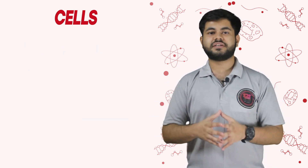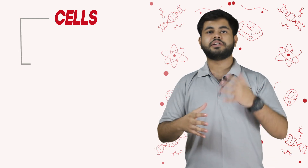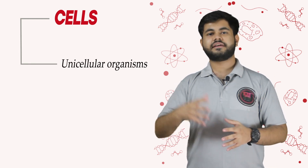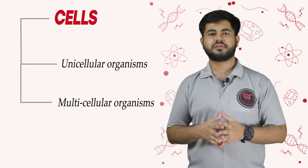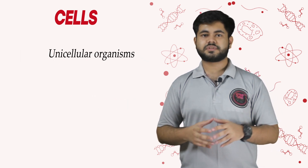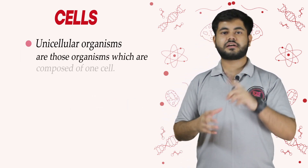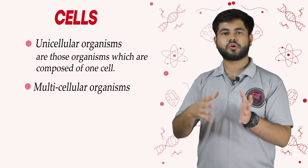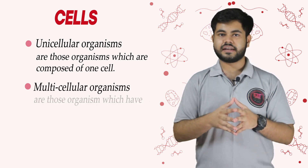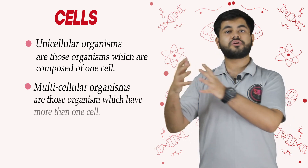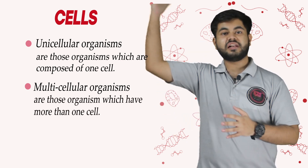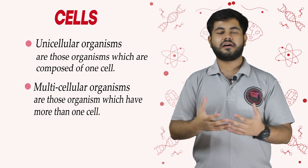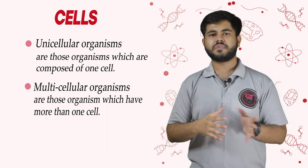Moving ahead, we will talk about organisms on the basis of cells. There are unicellular organisms and multicellular organisms. Unicellular organisms are those composed of only one cell, while multicellular organisms have more than one cell — they can have millions of cells or just a few, but more than one.